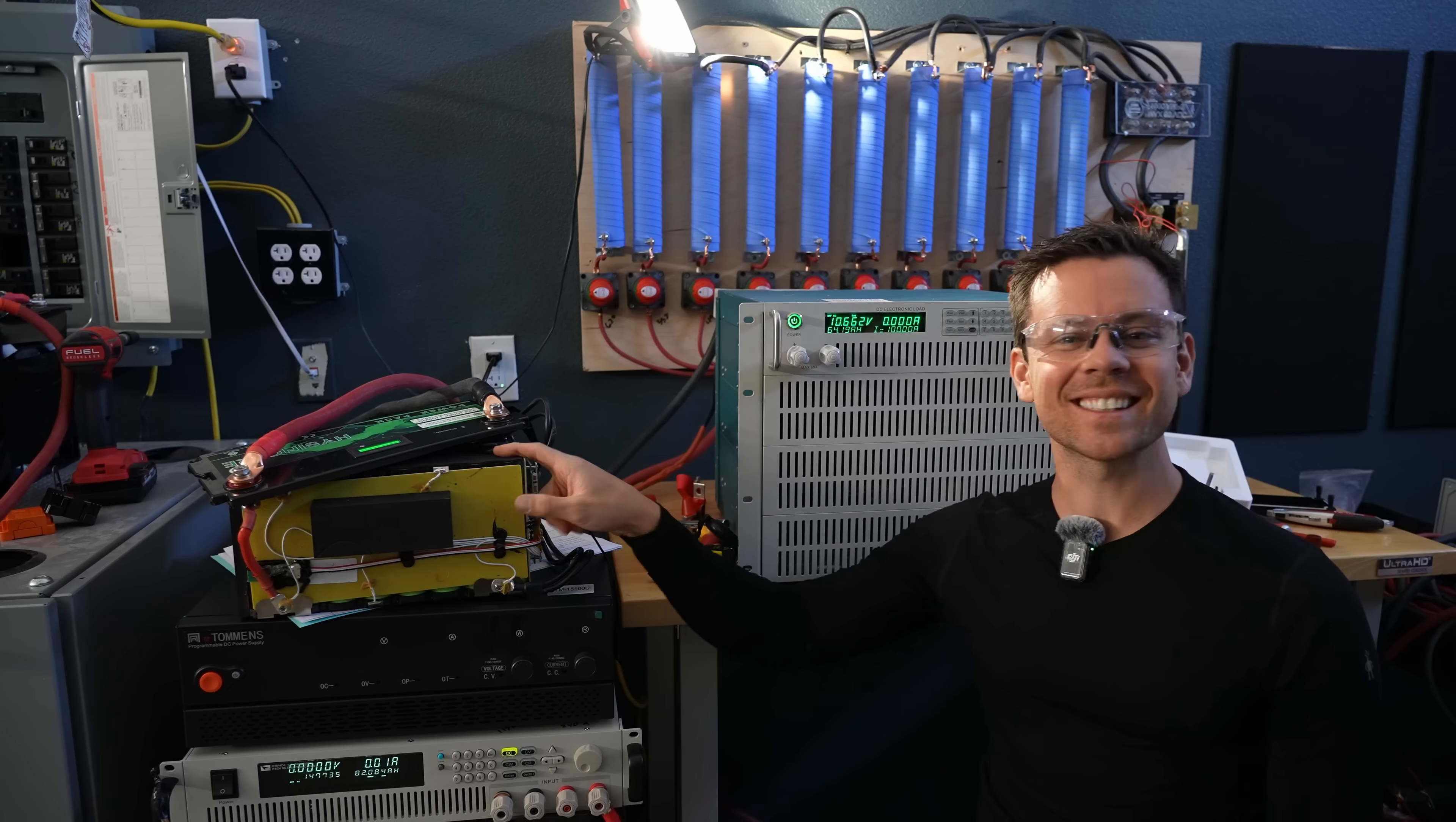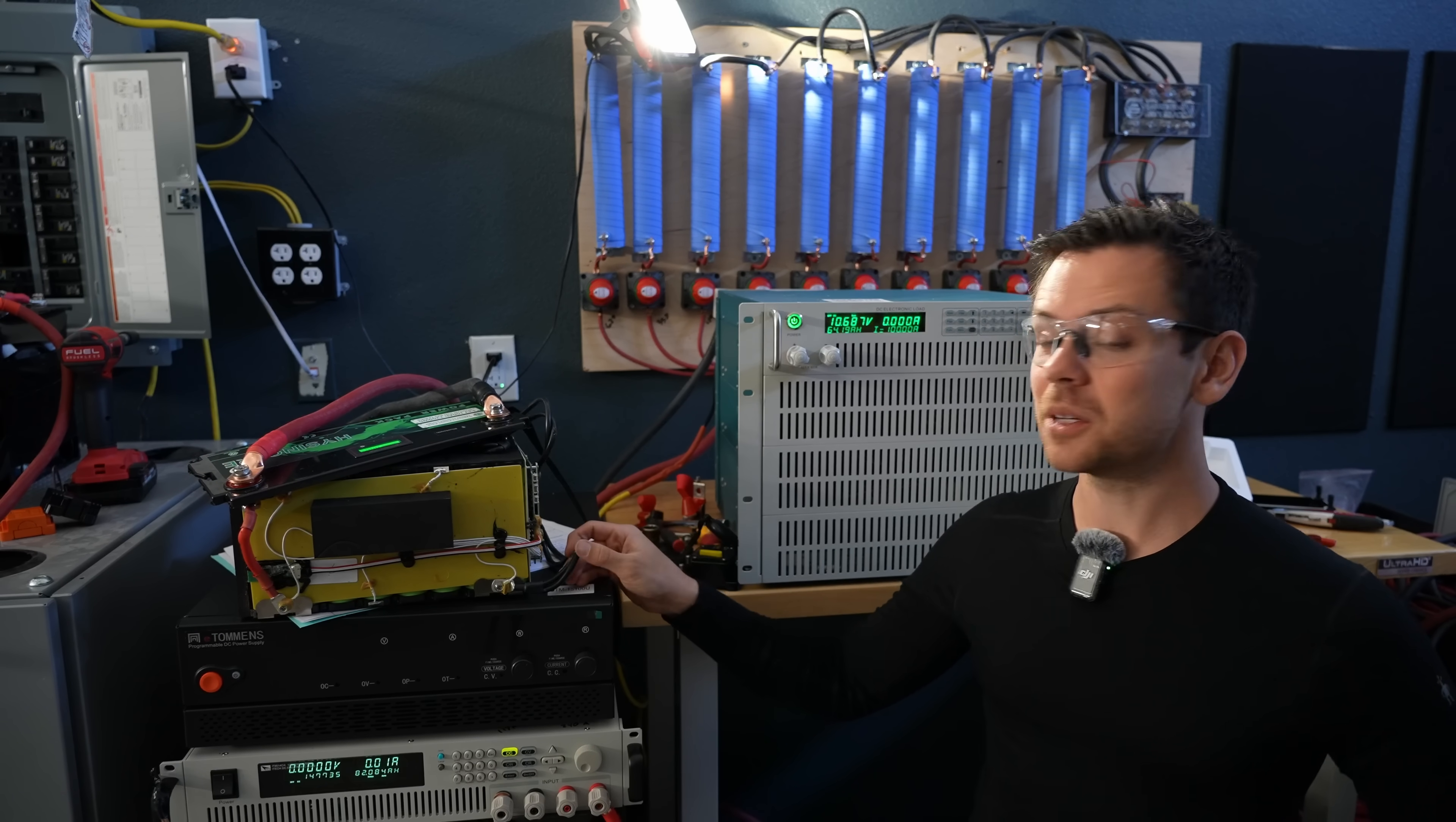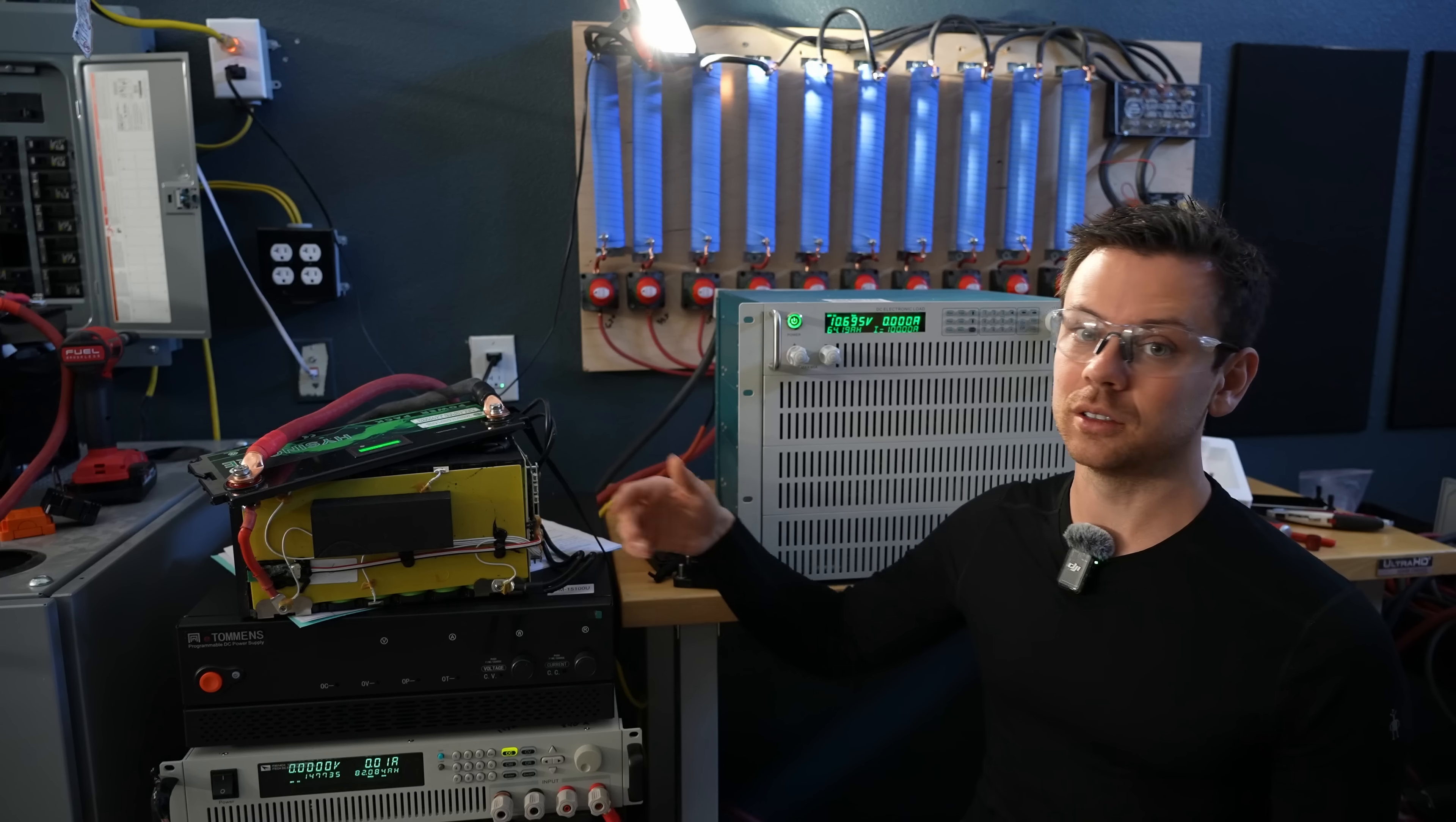All right guys, we did it. 64 amp hours at a 1C rate and these cells are hot. Now all the arguments for sodium ion batteries make sense for grid scale stuff in the future, in about five years. Just imagine where LFP will be in five years. For low voltage systems with the inverters that we use for off-grid solar, the voltage curve and the efficiency alone make it unpractical.